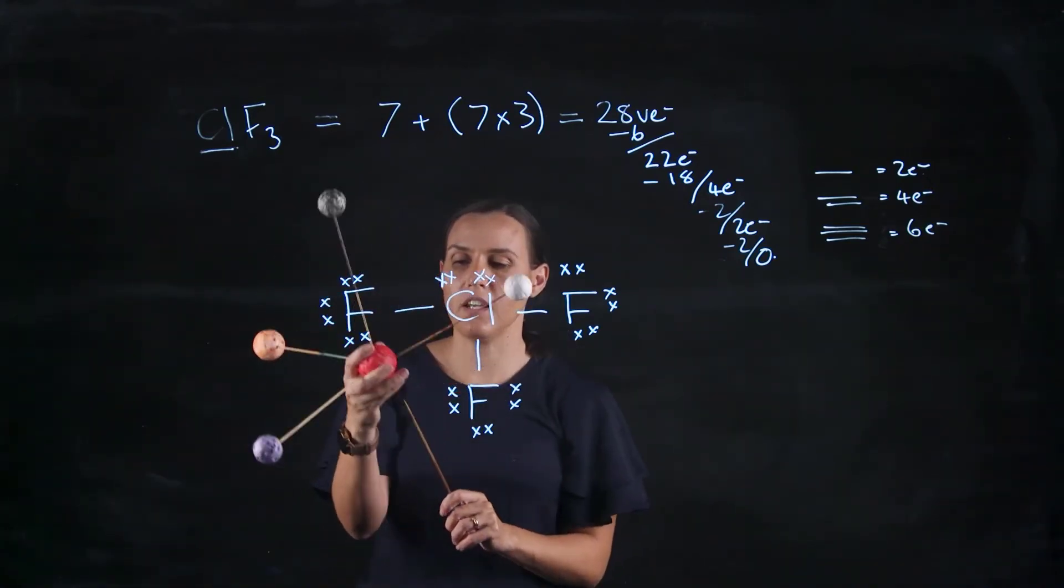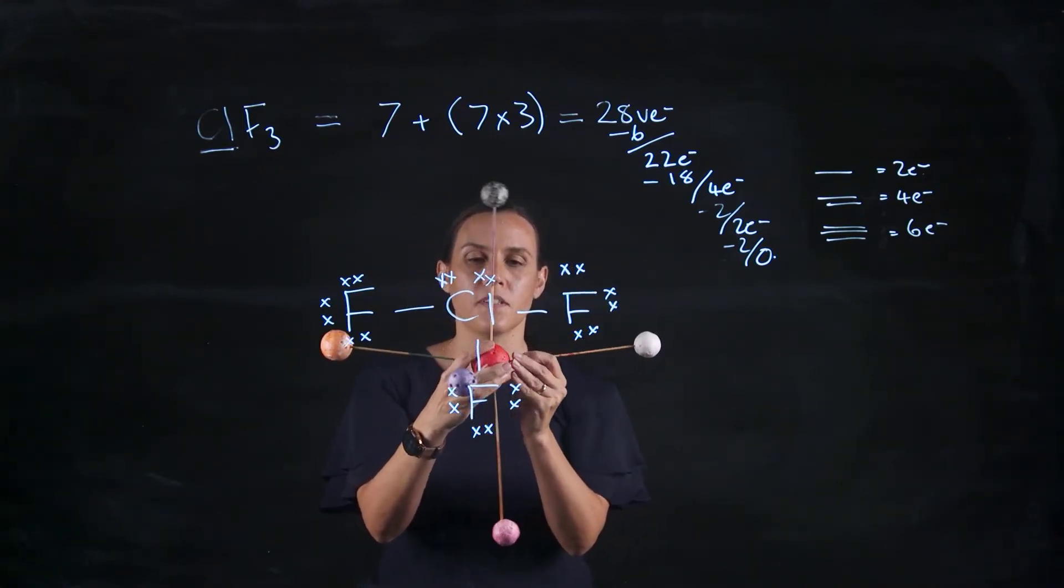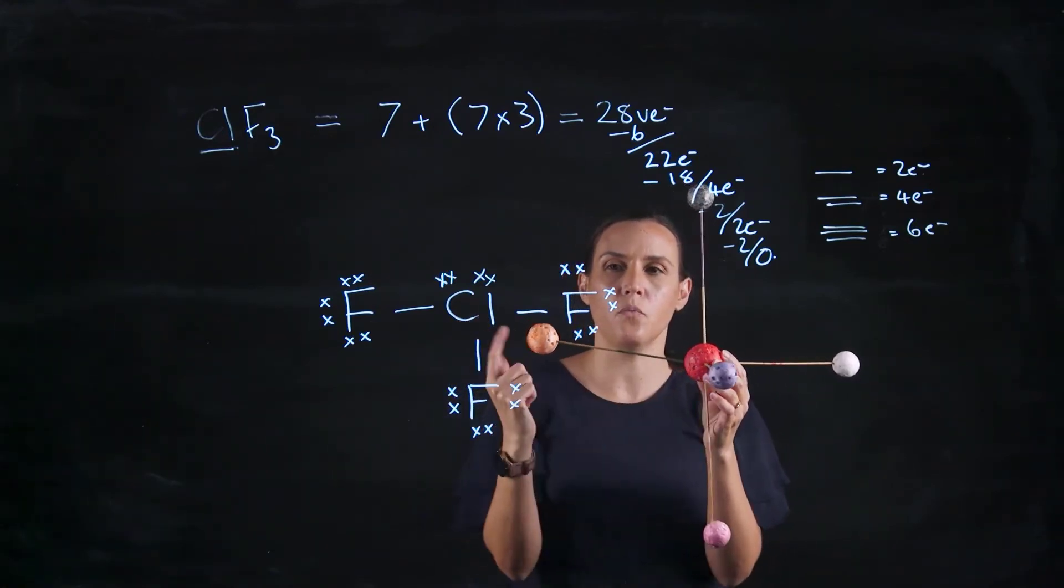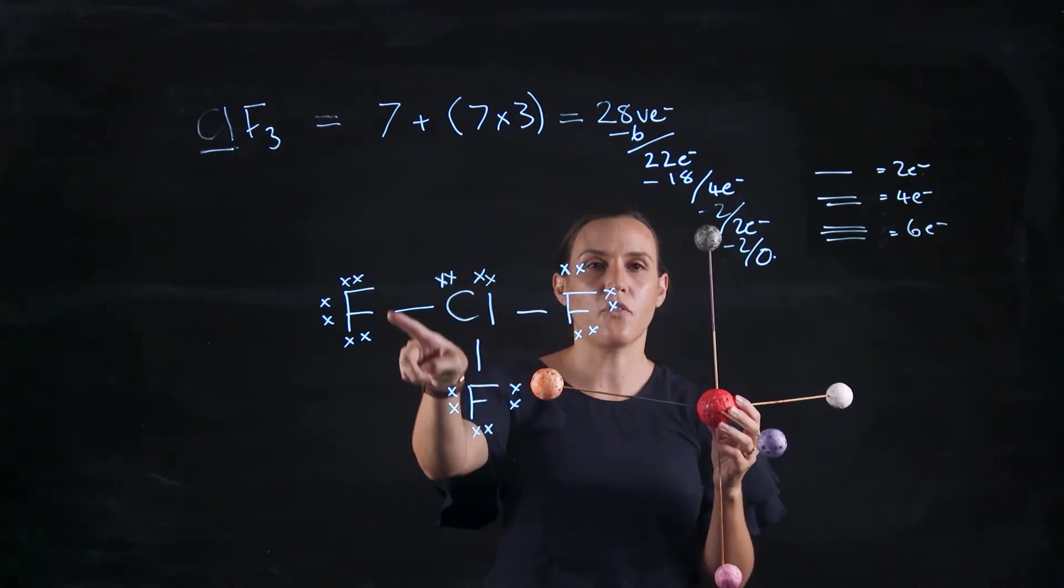So I've got the model kit here. I'm just trying to make it look a bit better. So we've got five groups that are attached to our central chlorine. So chlorine, one, two, three, four, five. Now two of these are lone pairs and three are bonding.